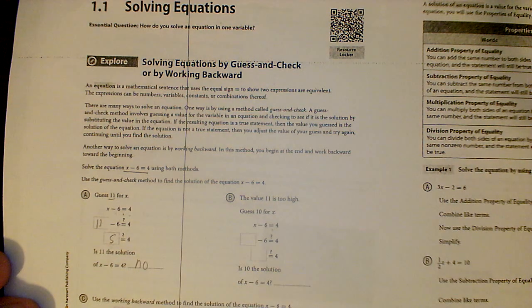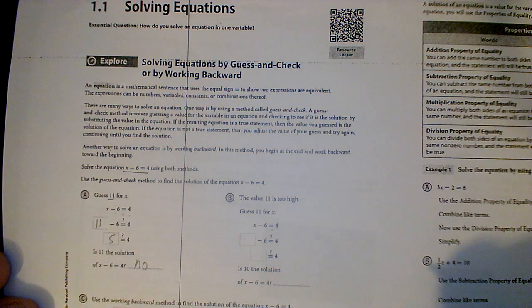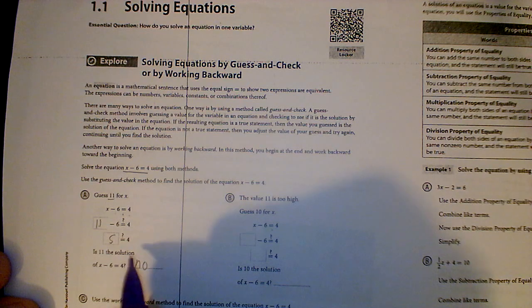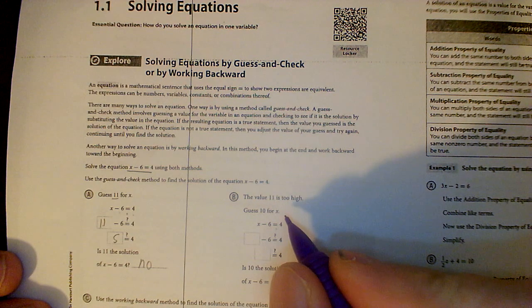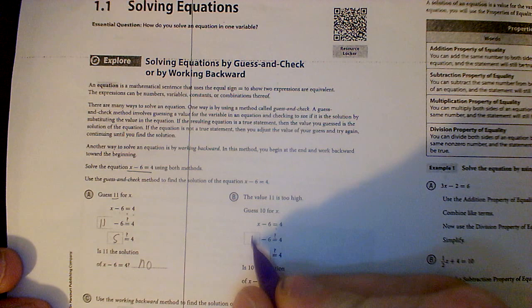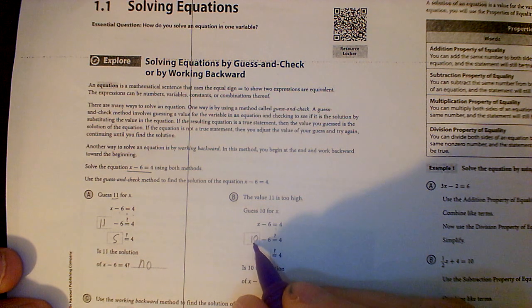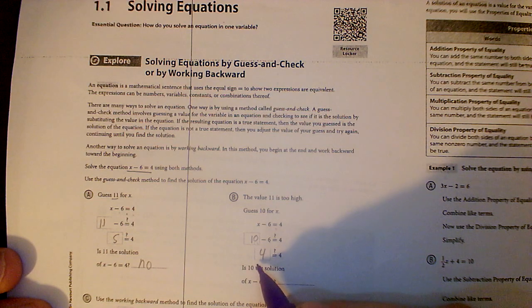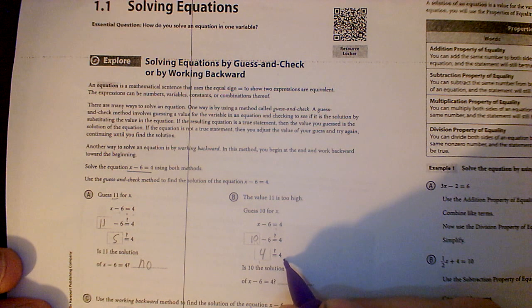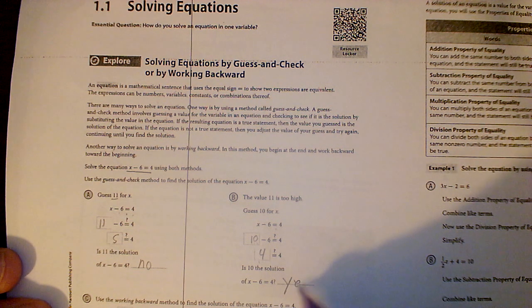No, it's not a solution. 11 was too high. We can see that 5 is bigger than 4. So if I go through this and my guess is wrong, come over here. If 11 was too high, I'm going to guess 10. 10 minus 6 is 4. 10 minus 6 is actually 4. I'm just working down this left side. 4 happens to equal 4. Is 10 a solution? Yes.